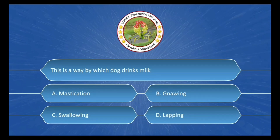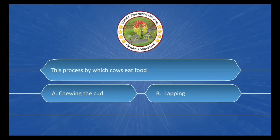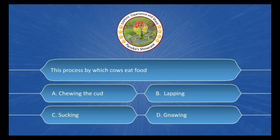Next question: This is the way by which a dog drinks milk. The options are: A. Mastication, B. Gnawing, C. Swallowing, D. Lapping. The correct answer is Option D: Lapping.